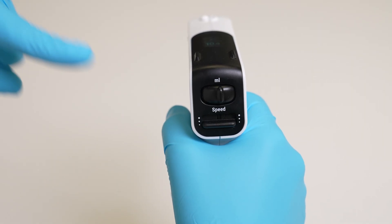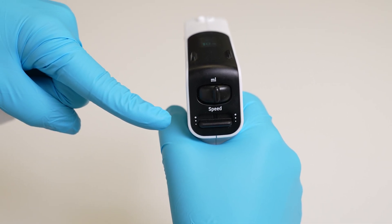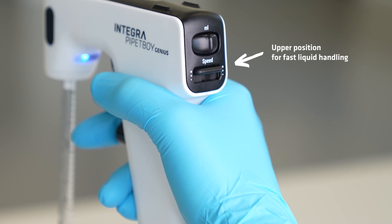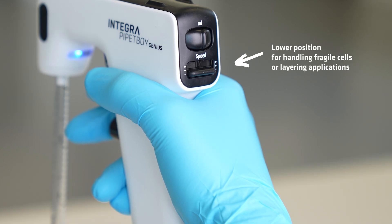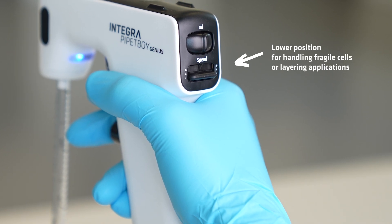Firstly, the instrument is equipped with three speed settings. Simply move the speed slider to the upper position for fast liquid handling, the middle setting for standard speed operations, or the lower position for handling fragile cells or layering applications.